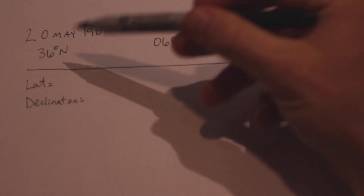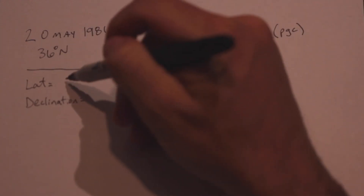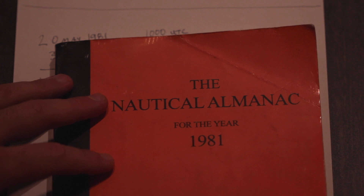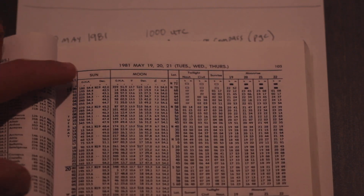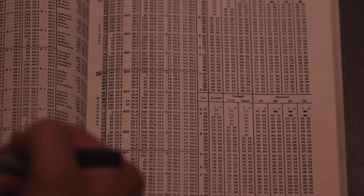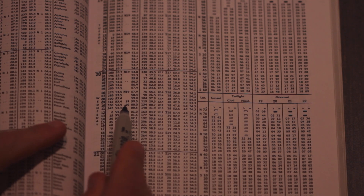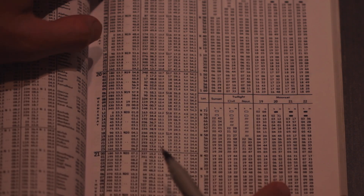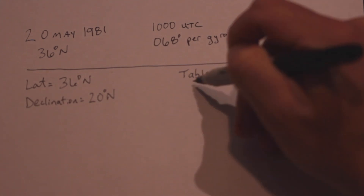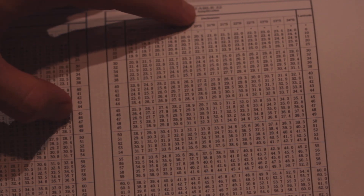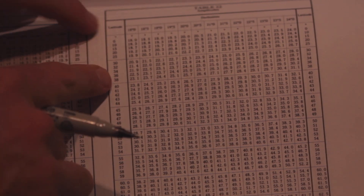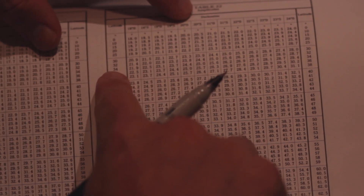Latitude is easy — we're at 36 degrees north. For declination, we open to the correct day in the nautical almanac and look at a time of 1000 UTC in the declination column, and we see that the declination is north 20 degrees. Now we have enough information to go into Bowditch Table 22. Where a latitude of 36 degrees and a declination of 20 degrees meet, that gives us an amplitude answer of 25 degrees.